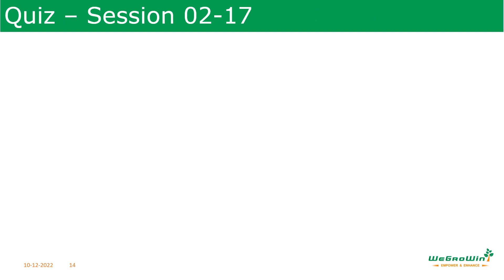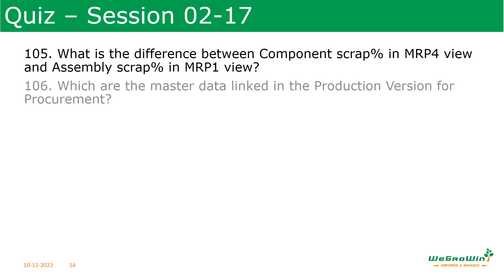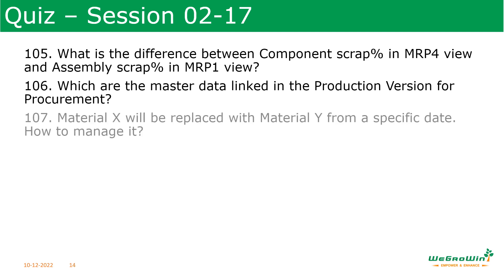Quiz questions for this session: What is the difference between component scrap percentage in MRP4 view and assembly scrap percentage in MRP1 view? Which are the master data linked in the production version for procurement, that is subcontracting? Material X will be replaced with material Y from a specific date — how do you manage it? Answers will be discussed in the next session.